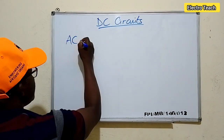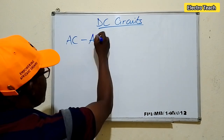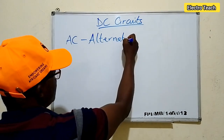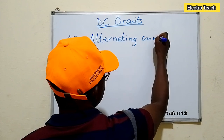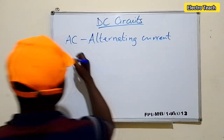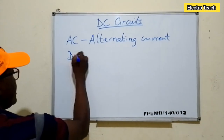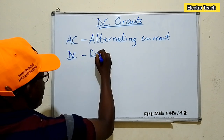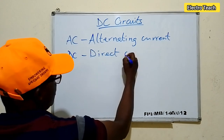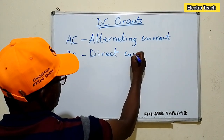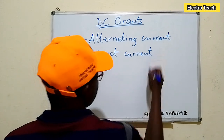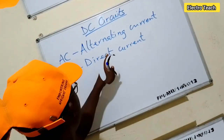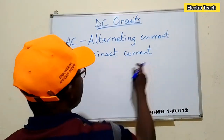AC stands for alternating current, and DC stands for direct current. Now, to make it more practical — what are we talking about when we refer to alternating current and direct current?